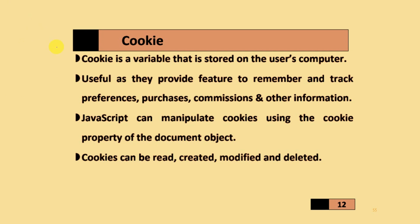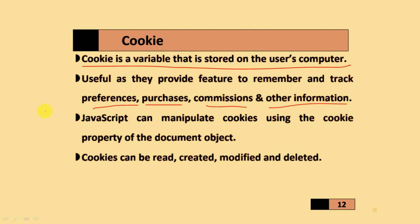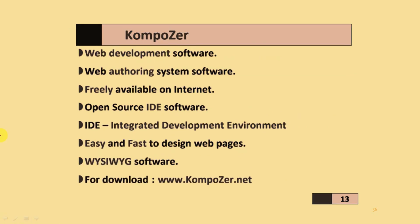Cookies are variables stored on the user's computer. They are useful as they provide features to remember and track preferences, purchases, commissions, and other information stored on the computer. JavaScript can manipulate cookies using the cookies properties of the document object. Cookies can be read, created, modified, and deleted. Composer software is a web development and web authoring software, freely available on the internet at composer.net, and it is open source IDE software.